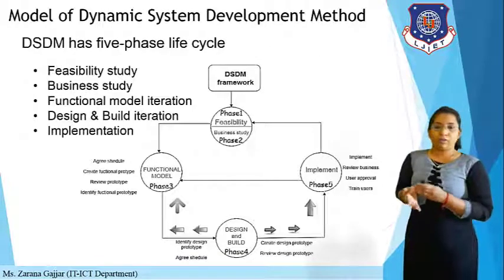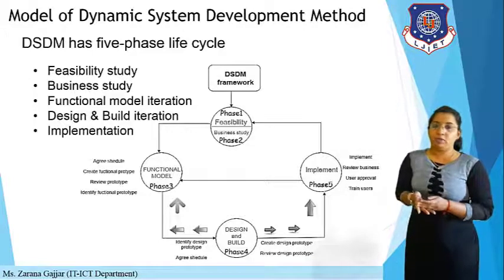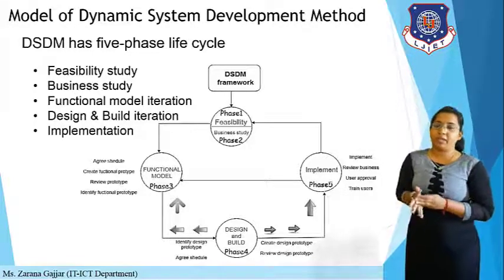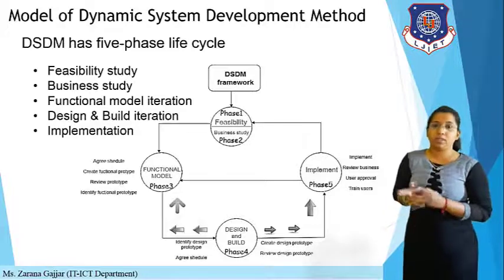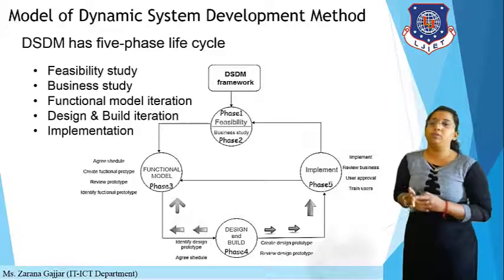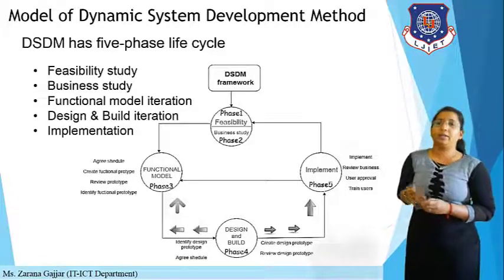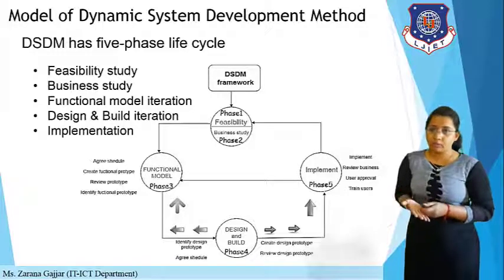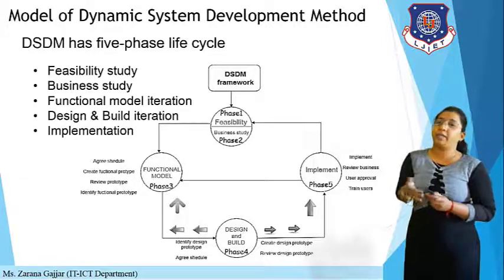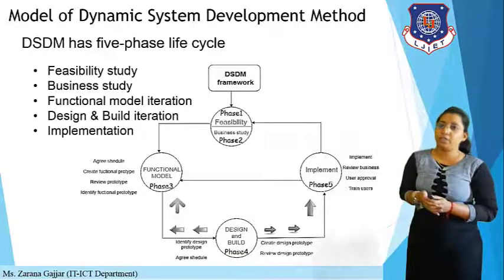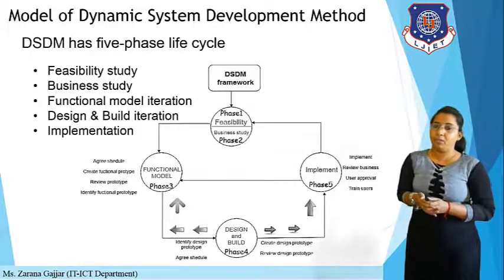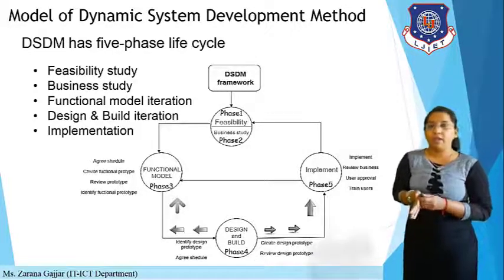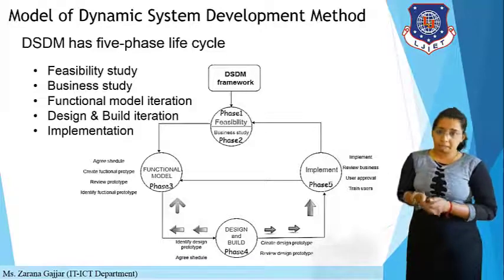DSDM has a life cycle consisting of five phases: first is Feasibility Study, second is Business Study, third is Functional Model Iteration, fourth is Design and Build Iteration, and fifth is Implementation.